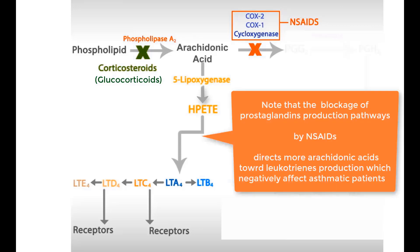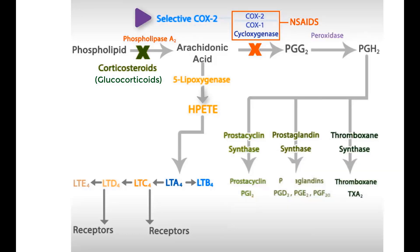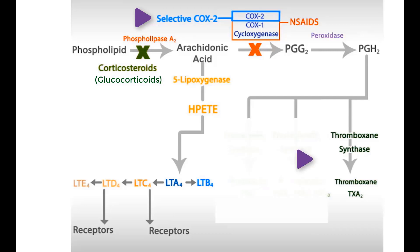It is clinically important to note that the blockage of prostaglandin production pathways by NSAIDs directs more arachidonic acid toward leukotriene production, which negatively affects asthmatic patients. The relatively new selective COX-2 inhibitors have no effect on COX-1; therefore, they don't interfere with thromboxane production.